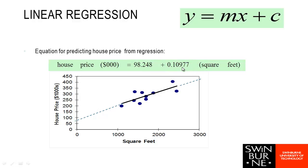We have the constant and then the slope of the line, which is our multiplier — it gets multiplied by how many square feet we have. As square feet increases, each additional square foot adds that much to my predicted house price. So if I wanted to predict a house price for one just over 2,000 square feet, I can trace across or, more accurately, use my equation to get an estimate.